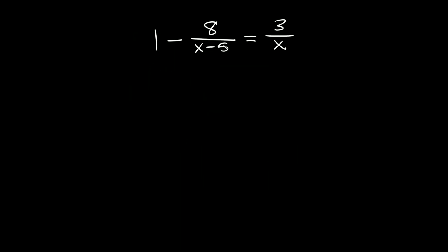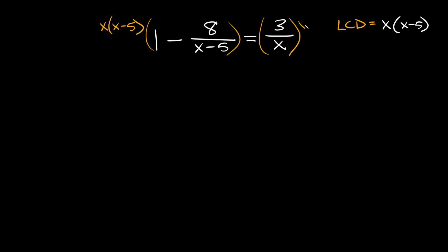Here's the next one. We have 1 minus 8 over x minus 5 is equal to 3 over x. Again, find the LCD by multiplying all your different denominators together. We have an x minus 5 and an x, so the LCD is x times x minus 5. We multiply the whole equation by x times x minus 5. For the first term, x times x minus 5 times 1 is just x times x minus 5. For the second term, the x minus 5 on top and bottom cancel, leaving 8x.